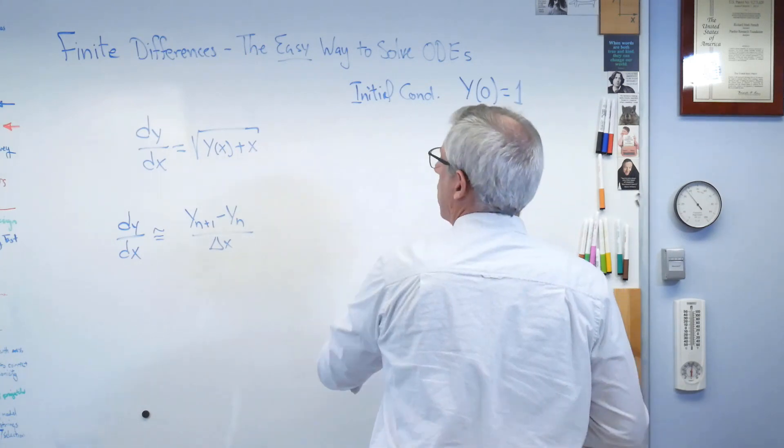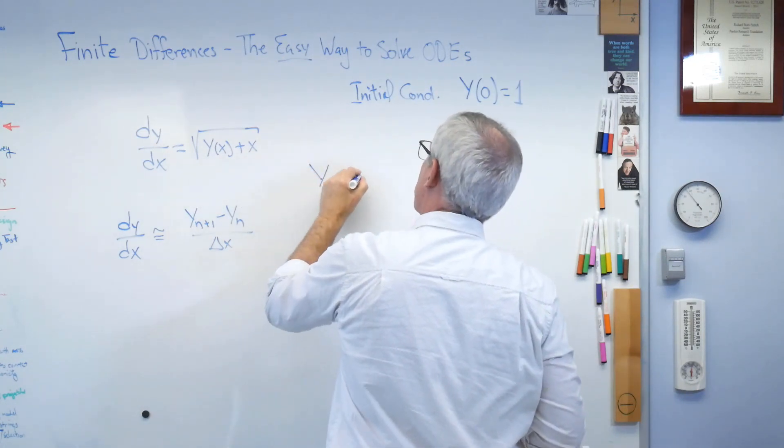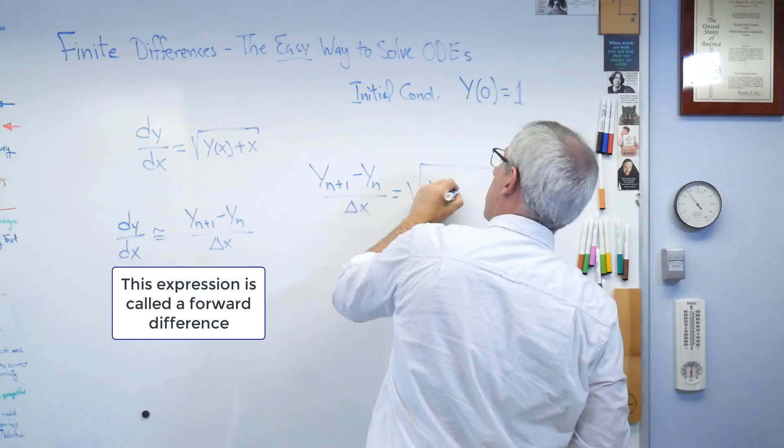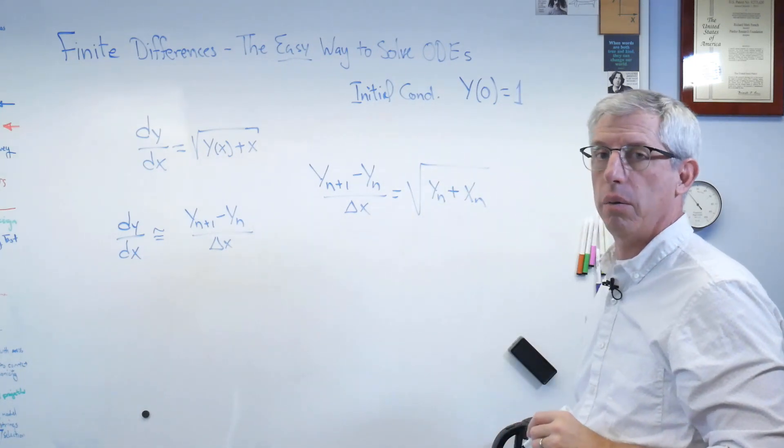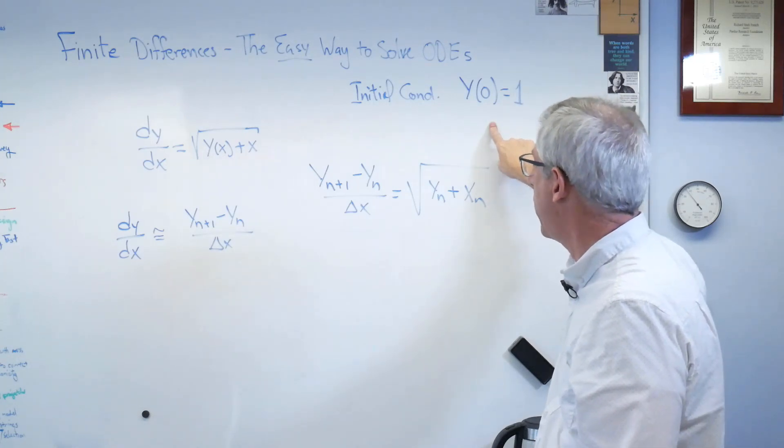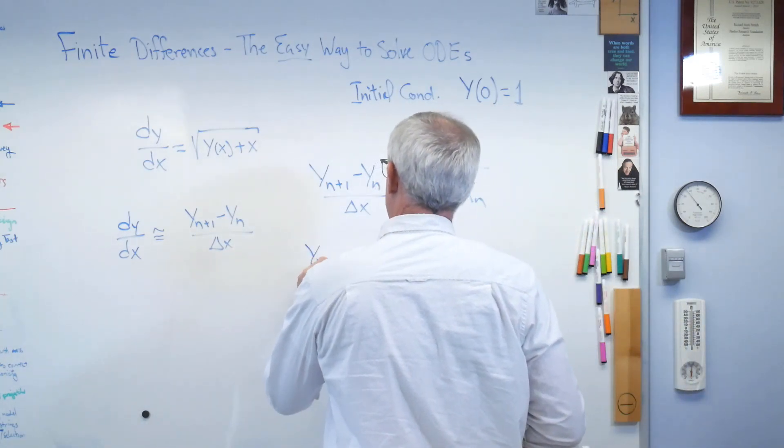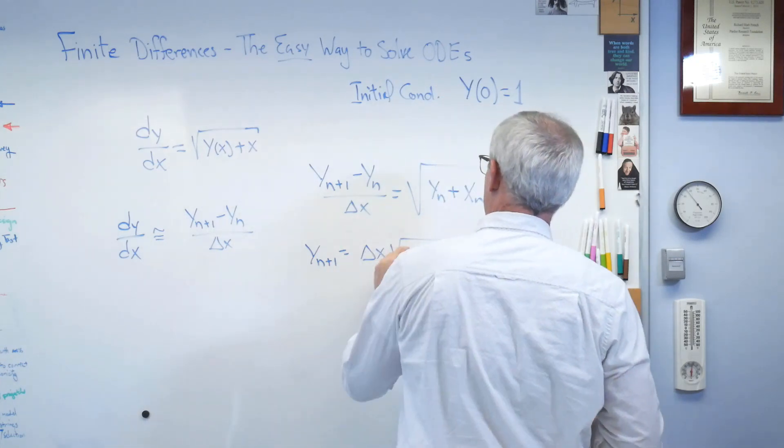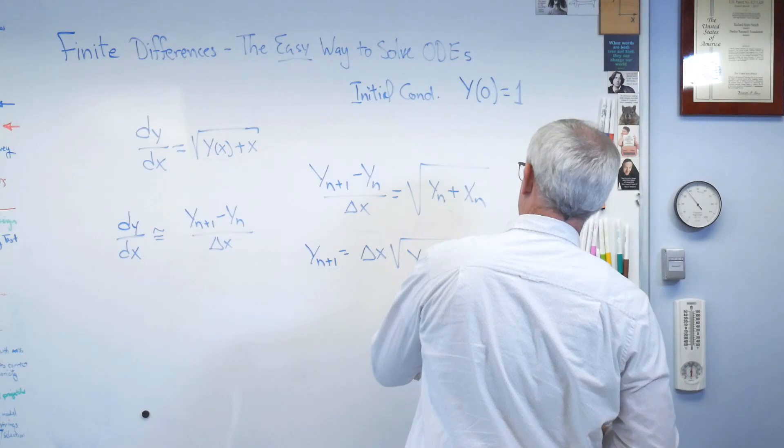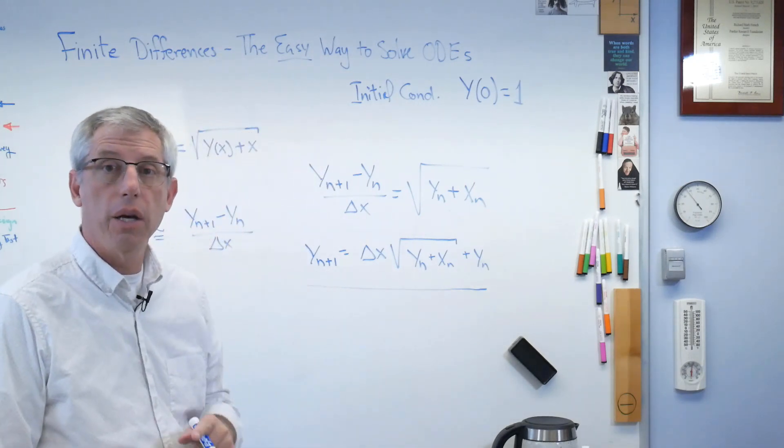So I'm going to get this out of our way here. And all I'm going to do is I'm going to plug this into this, and I'm going to add some subscripts here. So let's do this. There's y of n plus 1 minus y of n over delta x equals the square root of y n plus x n. There it is. Well, is there any x, y combination I know? Why, yes, there is. It's right there. All right. So there's that. So if I could just solve for that, I could just step through in x. So let's just do that.